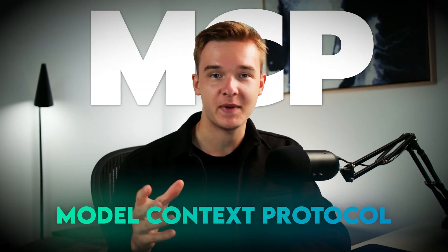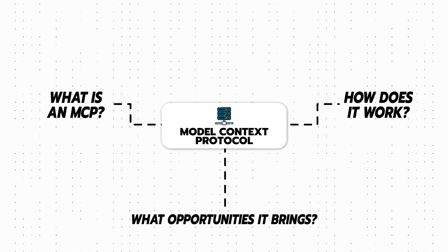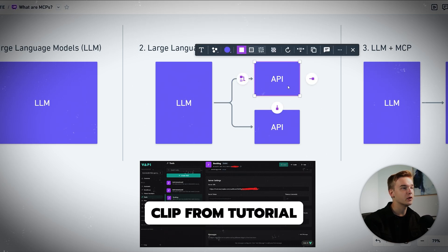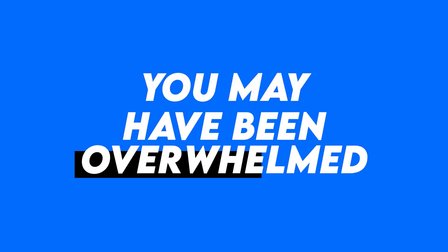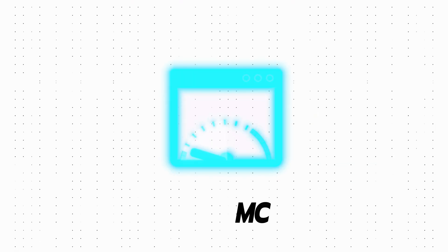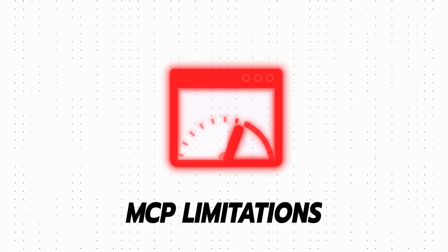The Model Context Protocol, or MCP — what is it, how does it work, and what opportunities does this bring? In this video, I will answer these exact questions to help you better understand what the Model Context Protocol means for building AI agents in the simplest way possible. If you are like me, you may have been overwhelmed by the name and found it hard to understand what it actually does. I'll also address some of the limitations of the MCP and why you might want to be cautious before diving too deep into it.